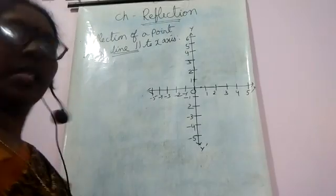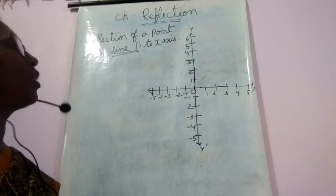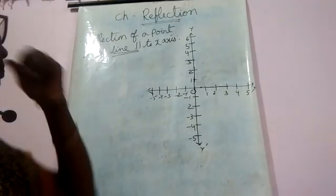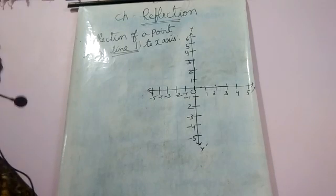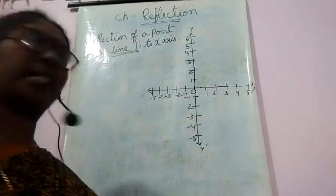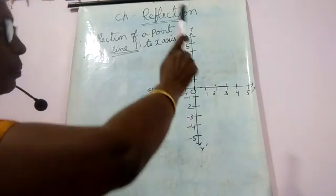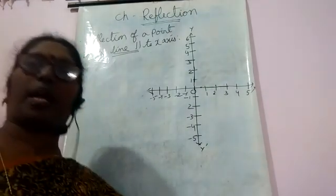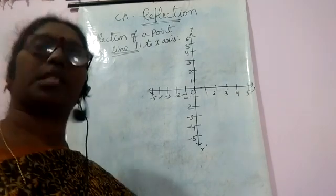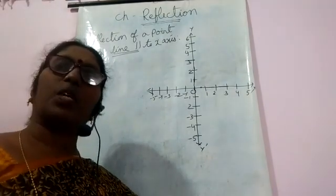Hello. Yesterday I explained part one of reflection. Today let me explain what happens when a point reflects through a line parallel to the x-axis, and what happens when a point reflects through a line parallel to the y-axis. In the last class we discussed what happens when a point reflects through the x-axis, y-axis, and origin.